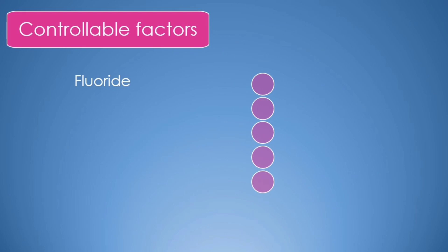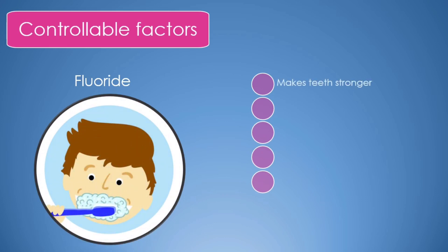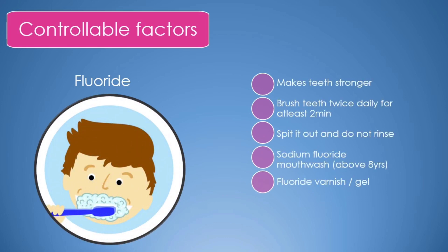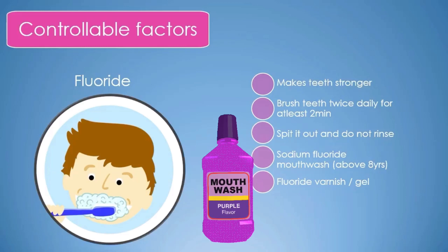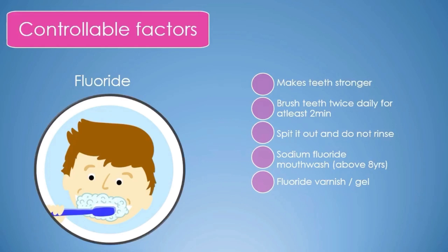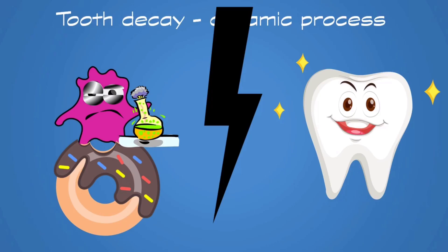Fluoride — consider this a tooth saviour. It is a mineral that makes teeth stronger and more resistant to decay, and the best part is it can reverse early decay. That's why fluoride is added to drinking water and the majority of toothpastes. It is advised to brush twice every day for at least two minutes — spit it out but do not rinse with water, to maintain fluoride levels in the mouth. Above eight years of age, you may also use fluoride mouthwash, but at a different time than brushing. In clinics, fluoride is also used in the form of gel or varnish to protect teeth from decay.